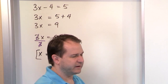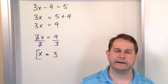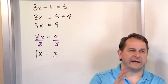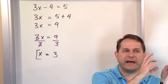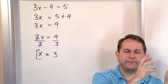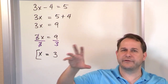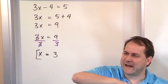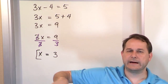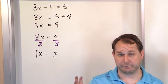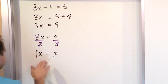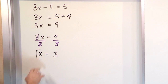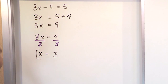Every one of these problems is going to be done the same way. We'll have some term with a variable — x, y, or whatever — plus some other stuff, and we move everything to the right to get the variable by itself, usually finishing with multiplication or division at the very last step.